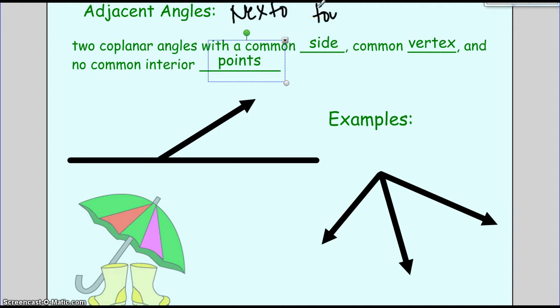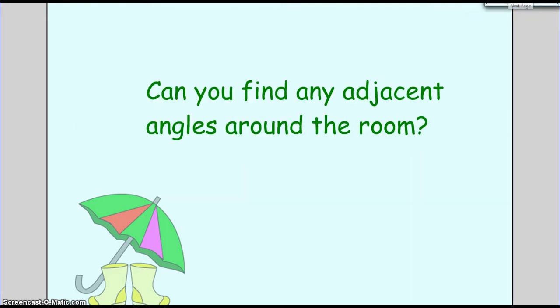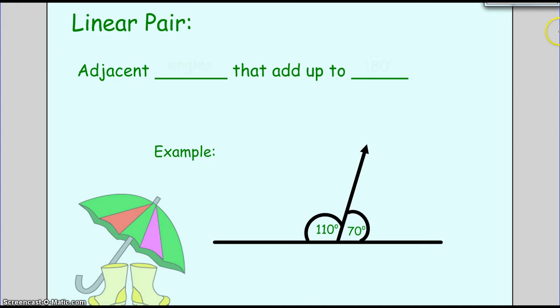So this angle, we'll call it angle A, is next to angle B and they are touching here. Those are touching, these are touching, these are not. Okay, so they are not adjacent.